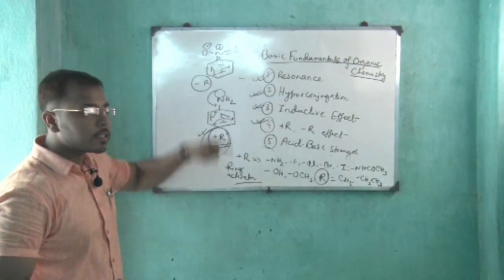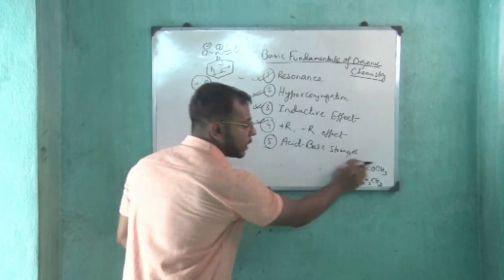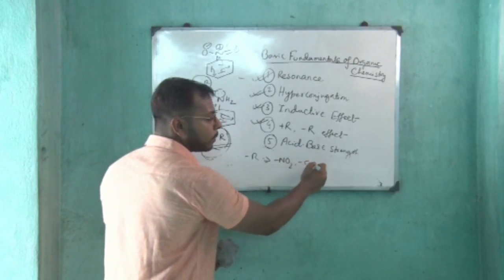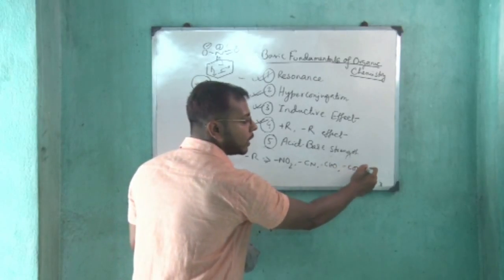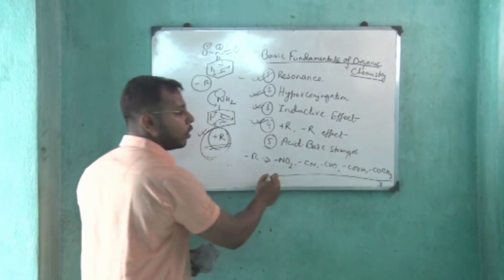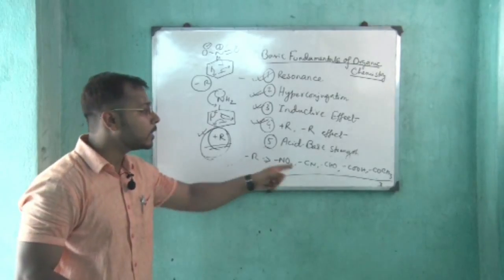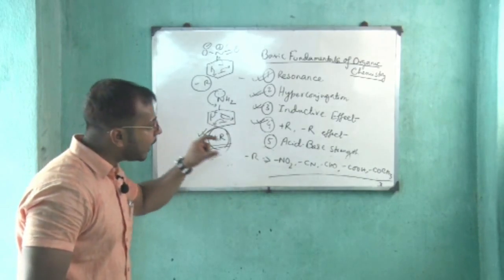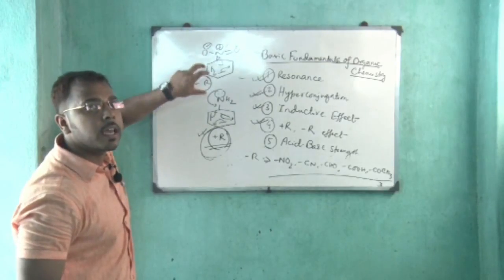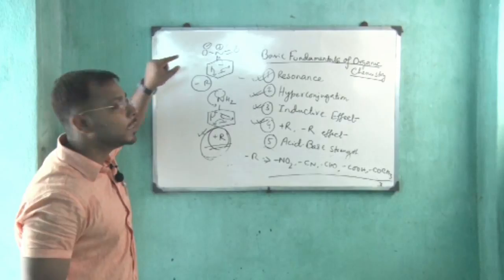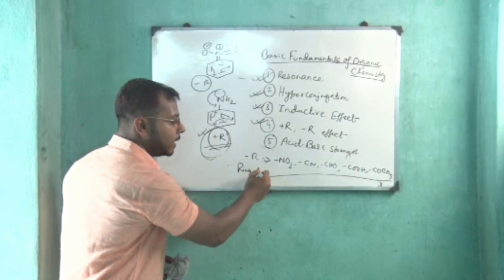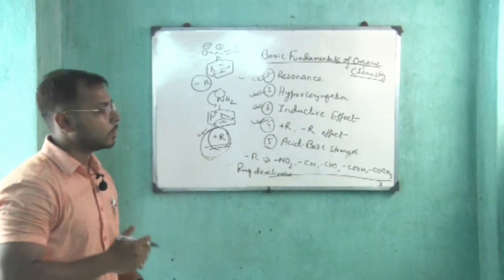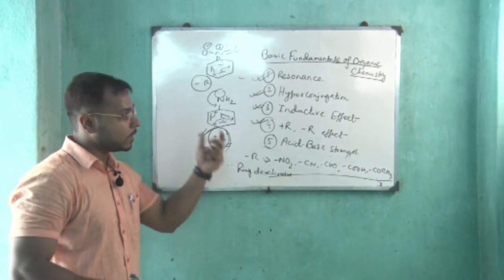Which groups have minus R effect? Minus R effect groups include: NO2, CN, CHO, COR (like COCH3). All of these groups have minus R effect, meaning they reduce the electron-donating capacity of the benzene ring. So they are known as ring deactivators towards electrophilic substitution. This is the basic concept of plus R effect and minus R effect.